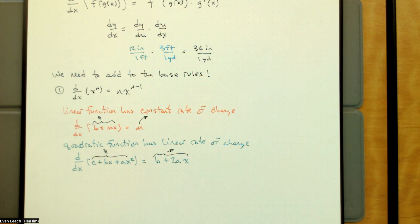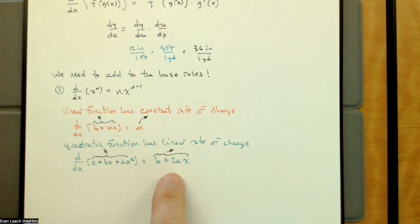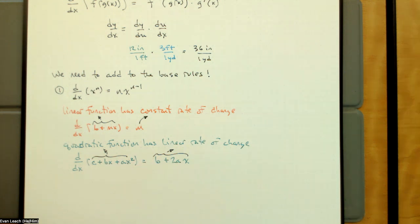Also notice that when we look at the rate of change of the rate of change of a quadratic function, that will be a constant. So if we look at the second derivative of a quadratic function, we'll get a constant. The first derivative is a linear function, the second derivative will just be 2a — a constant.